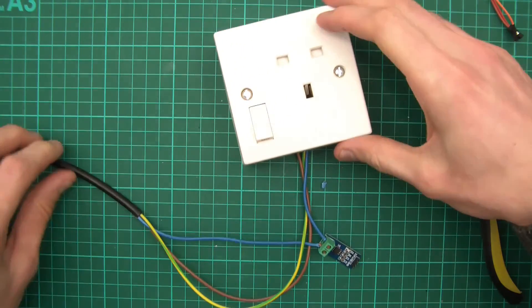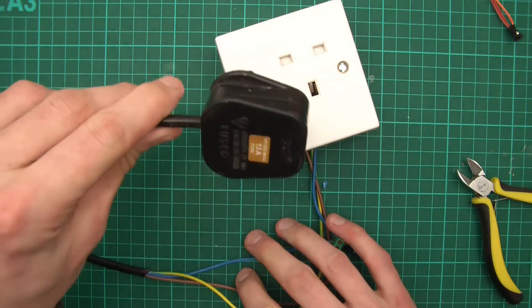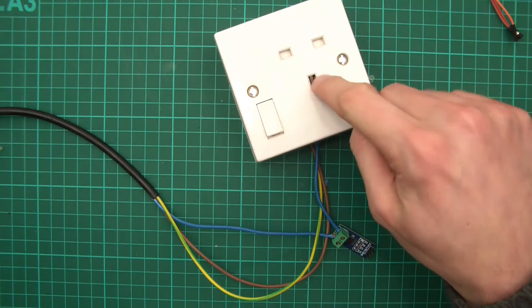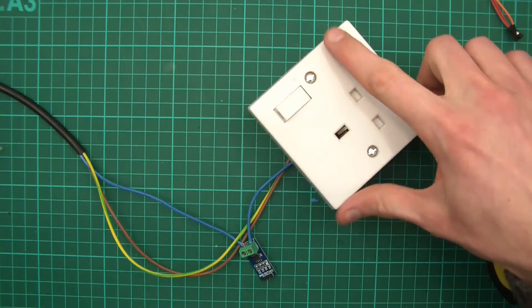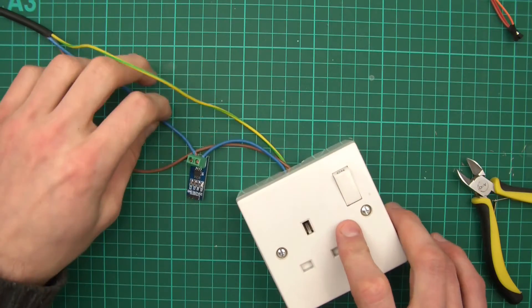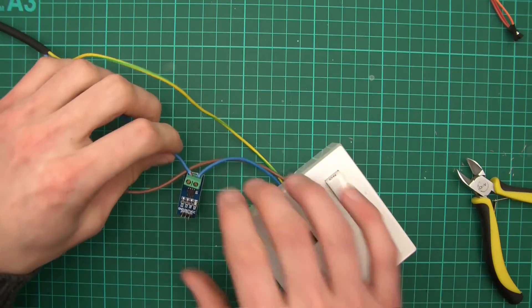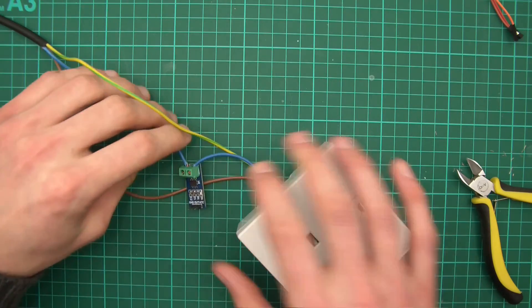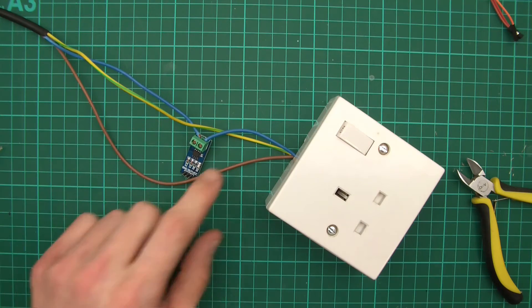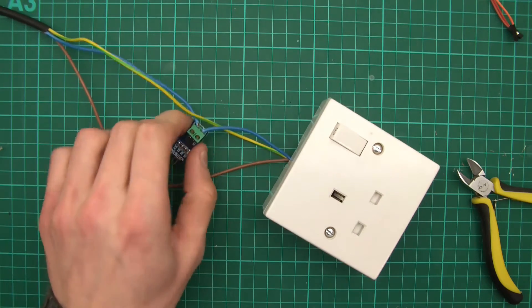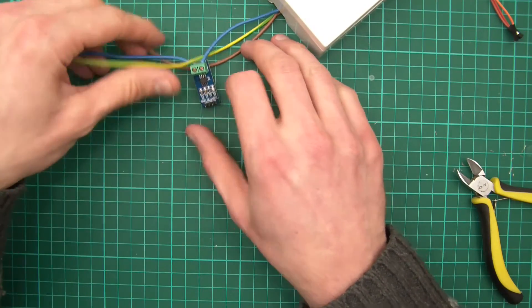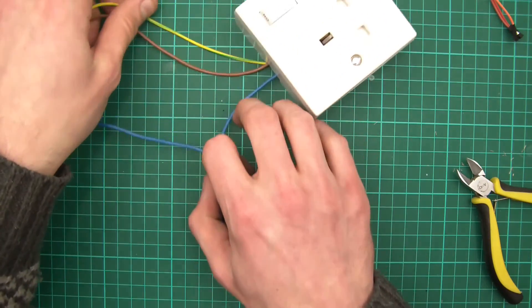And there we go. So now I've got the plug which I will plug into the mains. I've got live that goes straight to the live of the socket, and this thing's switched. Then I've got earth just for safety. And I've got the neutral wire which I've got the ACS 712 on, which will hopefully be able to measure the current that flows through. So the next thing I need to do is wire the Arduino, I suppose.